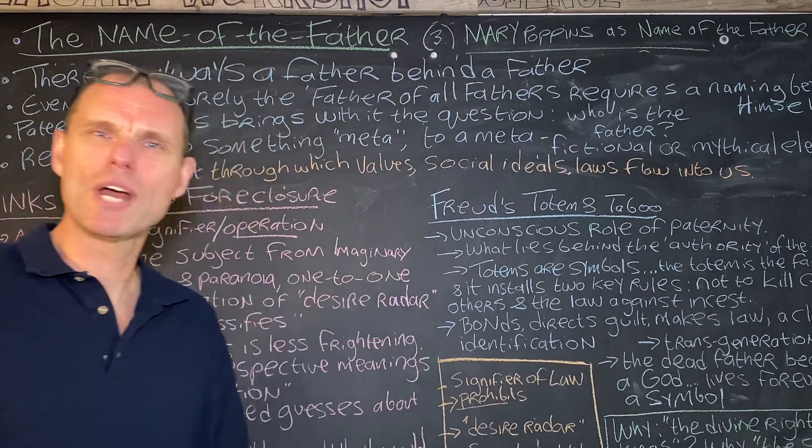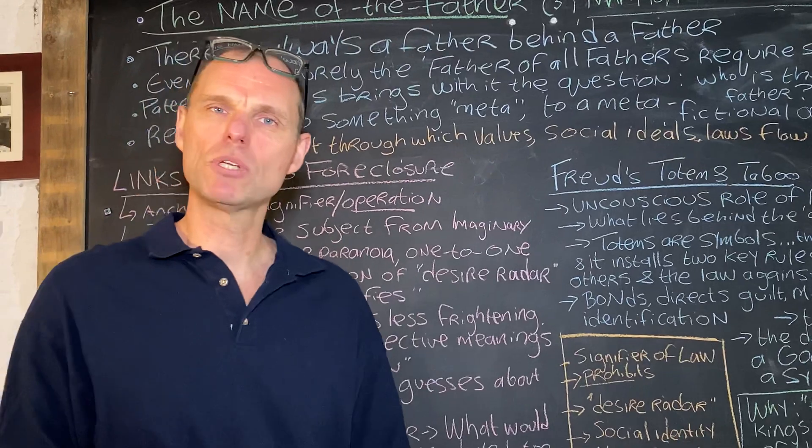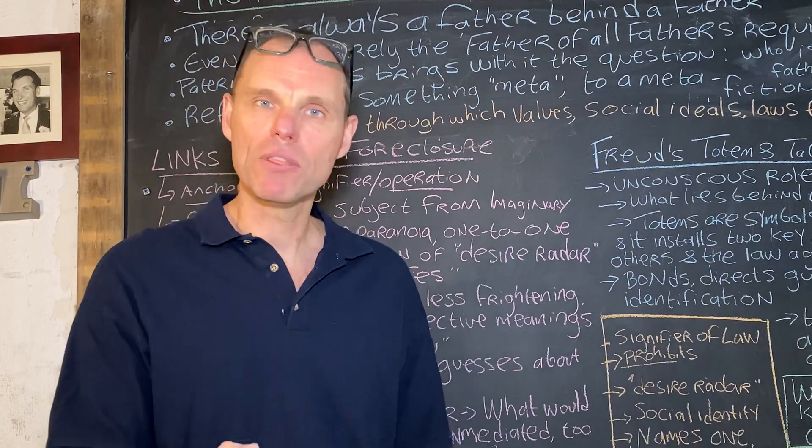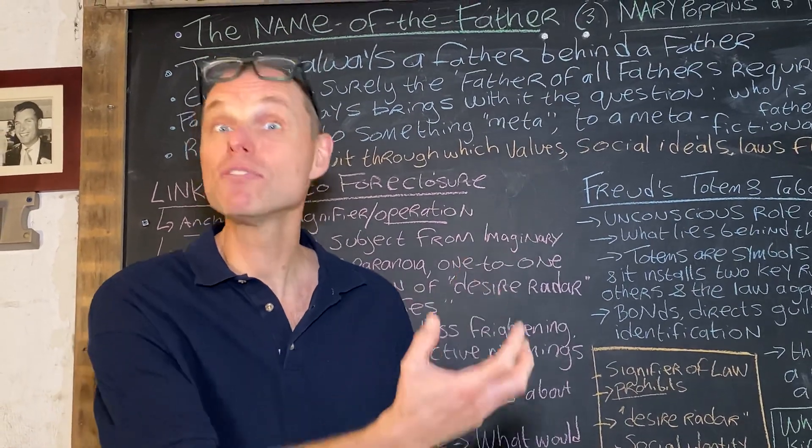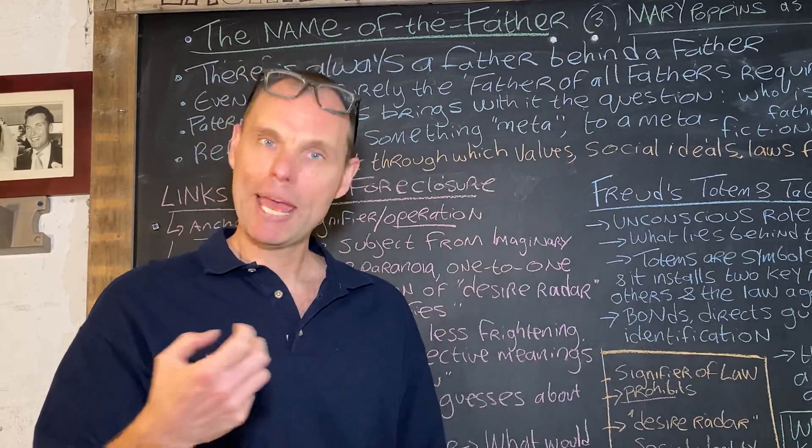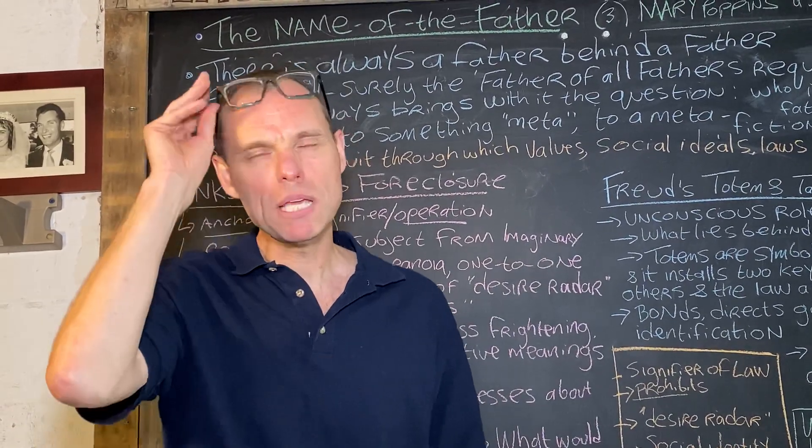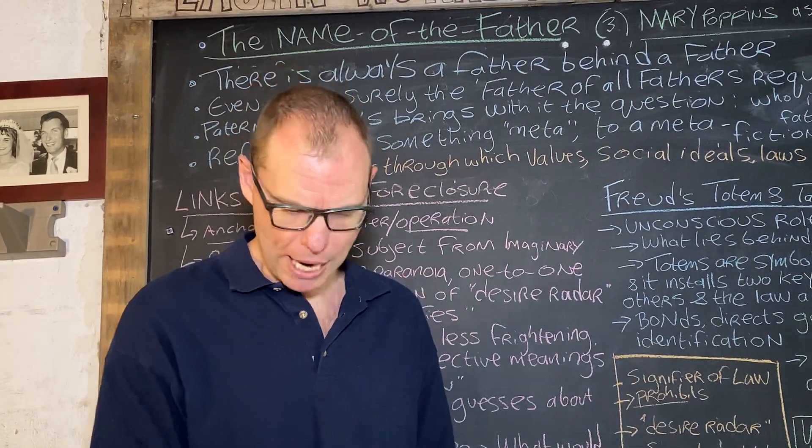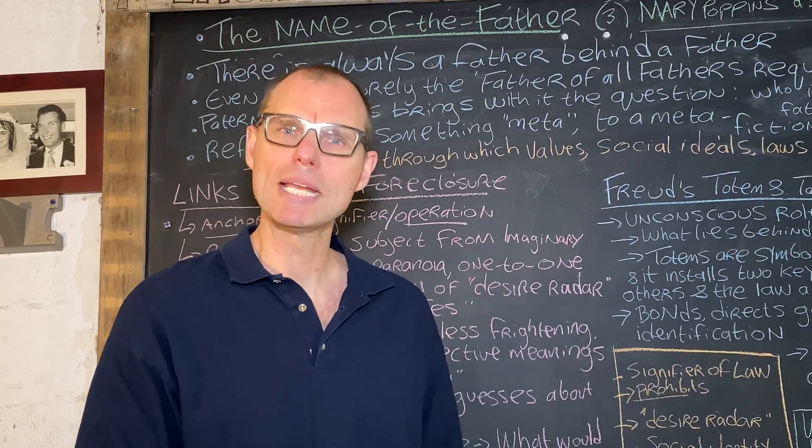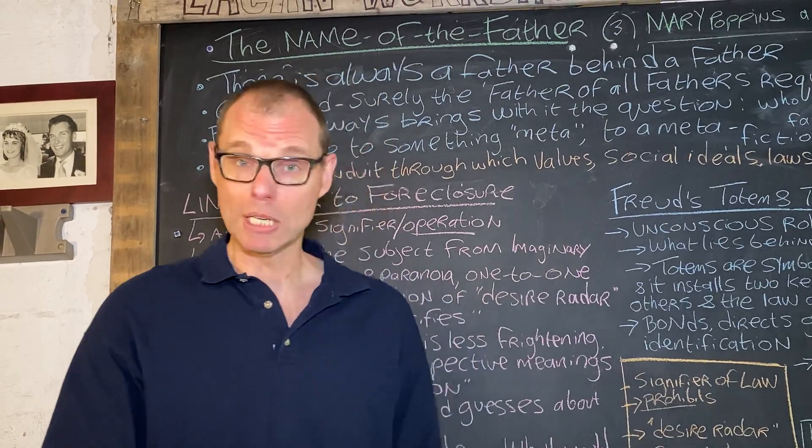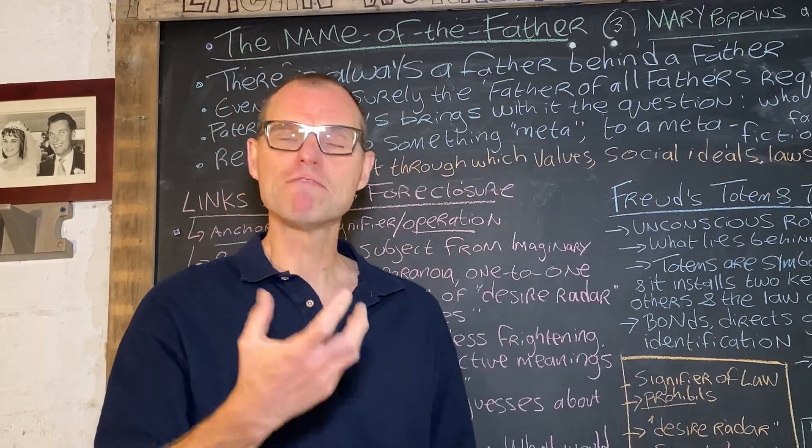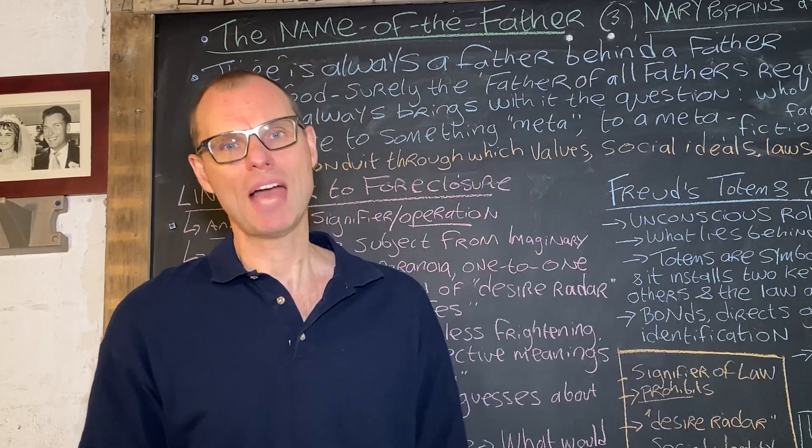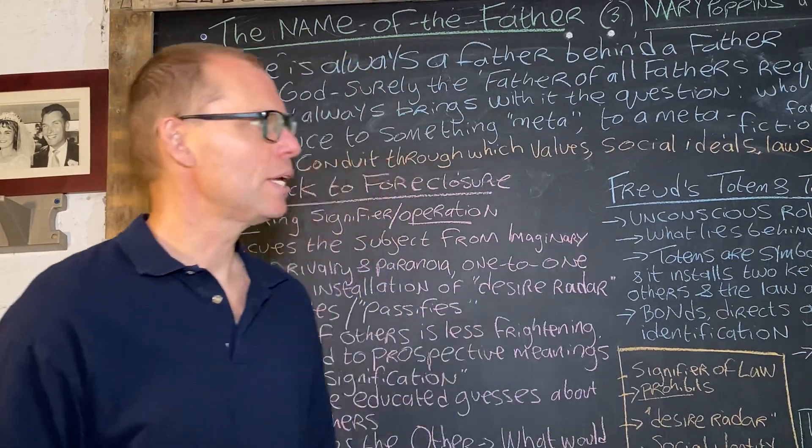What we want to do is bring together a series of explanatory concepts we've tried to utilize. We ended last time by trying to make a differentiation between the big Other as the locus of truth, as the treasury of signifiers, as the rules of the game, and the Name of the Father. The crucial point here is that the Name of the Father is that privileged signifier or operation that anchors this subject within the symbolic domain and thereby makes the big Other possible. The big Other doesn't operate in a viable, mediated way unless there has been the anchoring enabled by this installation of the Name of the Father.